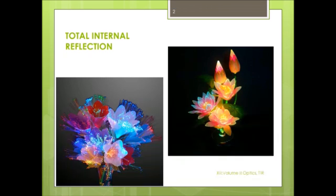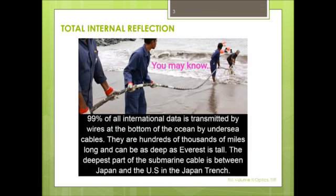Total internal reflection. 99% of all international data is transmitted by wires at the bottom of the ocean by undersea cables. They are hundreds of thousands of miles long and can be as deep as Everest is tall. The deepest part of the submarine cable is between Japan and the U.S. in the Japan Trench.